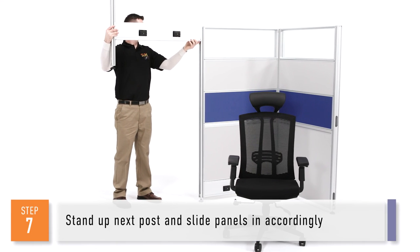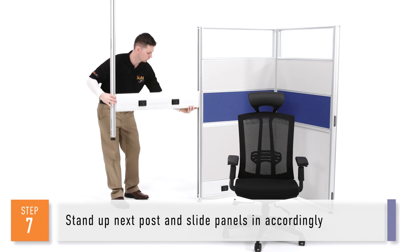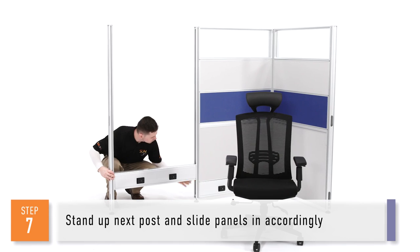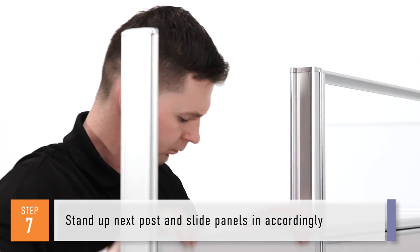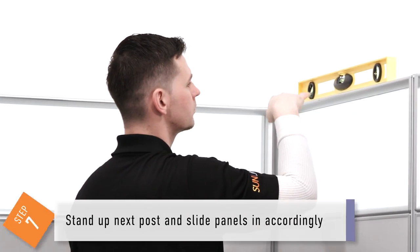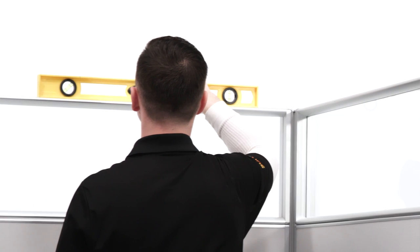Step seven. Stand up the next post, and slide panels in according to the plan to complete the next section of the wall. Since not all floors are level, it's best to check for leveling as you add on new walls.